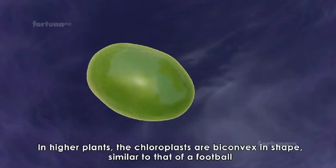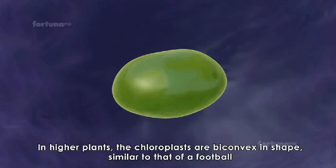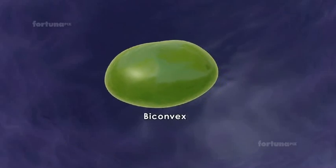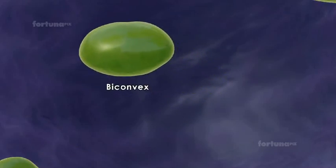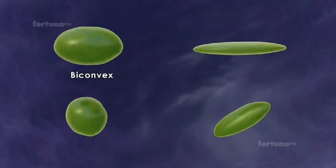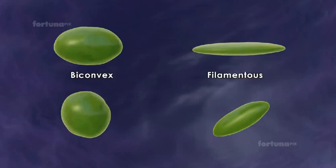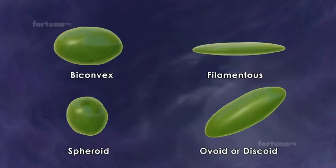In higher plants, the chloroplasts are biconvex in shape, similar to that of a football. However, in some plants, chloroplasts will occasionally take on other shapes such as filamentous, spheroid, ovoid or discoid.